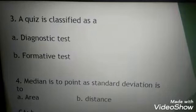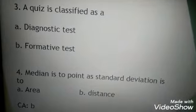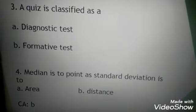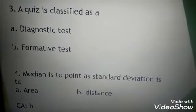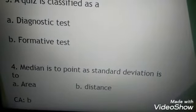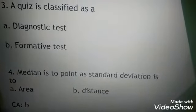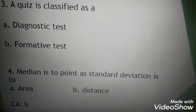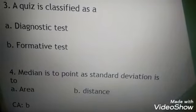Number three: a quiz is classified as A, a diagnostic test, or B, formative test. The correct answer is formative test. Remember, quiz is formative test. Number four: median is two point, a standard deviation is to distance, and the correct answer is B, distance. Remember guys, median is two point and standard deviation is to distance.